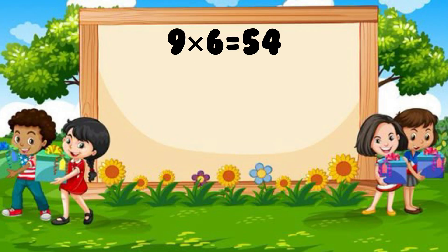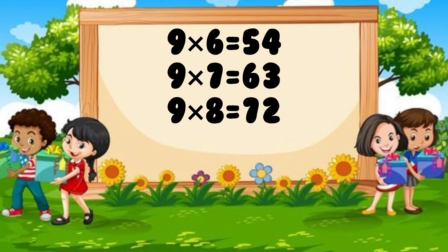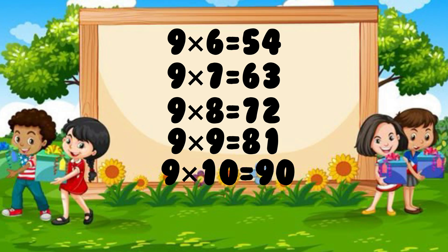9 sixes are 54. 9 sevens are 63. 9 eights are 72. 9 nines are 81. 9 tens are 90.